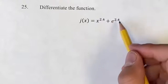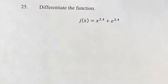So the first thing to notice is e to the 2.4 is just some number, it's just a constant, so the derivative of that is just going to be 0.